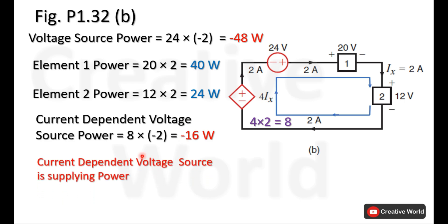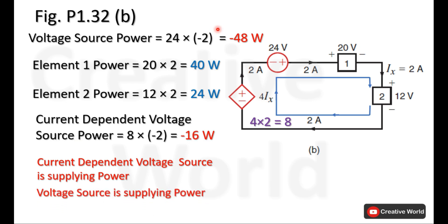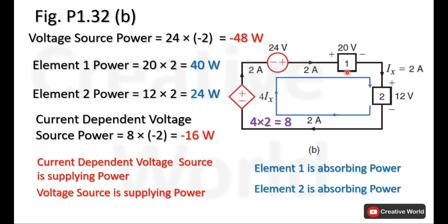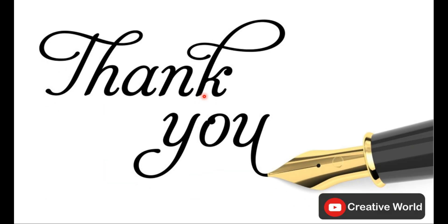The current dependent voltage source is supplying power, and the voltage source is also supplying power. Element 1 and element 2 are absorbing power. These calculations can be justified with the help of Tellegen's theorem — the sum of these four powers results in zero, which justifies the calculation validity. This was problem number 32. See you in the next video, thank you.